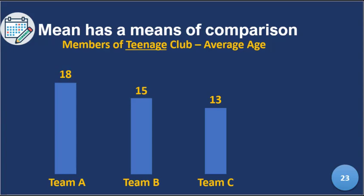If I see an average of 11 for a teenage club I'll be worried — the lowest possible is 13 and the highest is 19, so you will never get an average of 11. Similarly, if the average age is 20 there's a problem. So means and averages greatly help us check the health of the data. Team B looks fine — right in the middle, with a few 19-year-olds, a few 13-year-olds, and 15 as the central value.